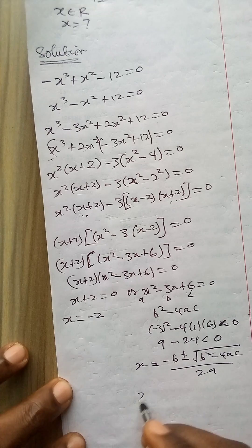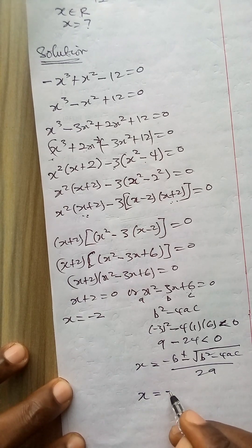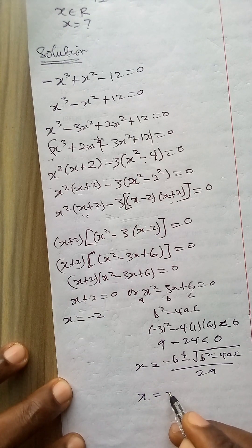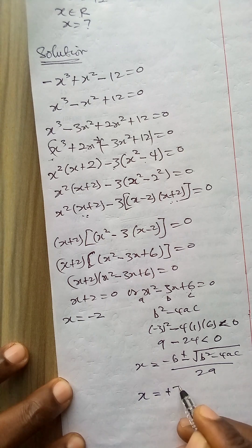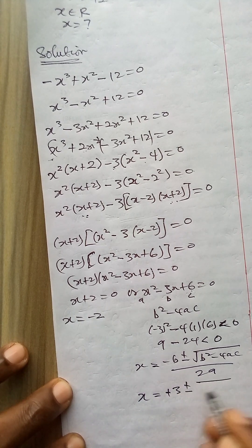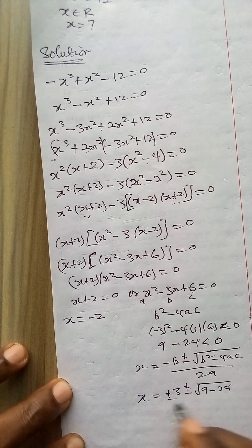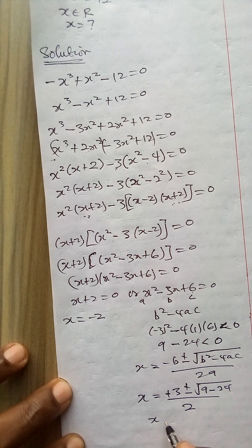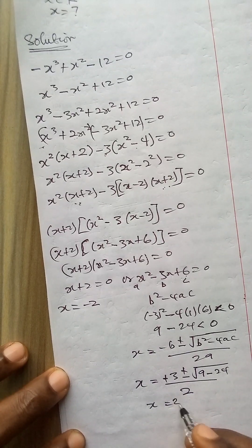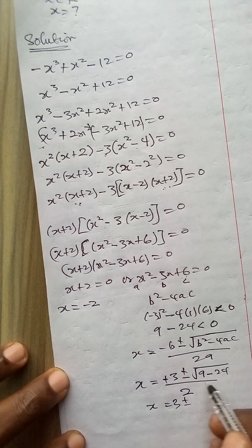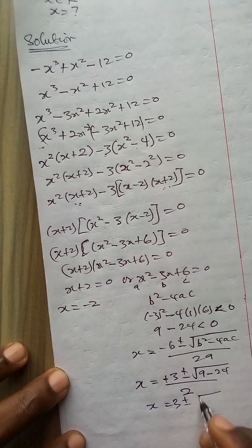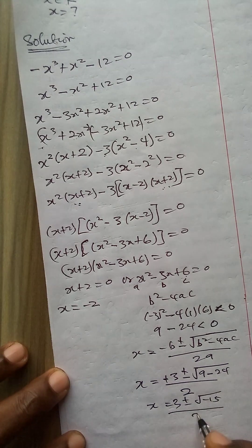Let me finish this part up. So x will now be minus minus 3, that is plus 3, plus or minus square root of (9 minus 24) which is what we got here, over 2 times 1. So x equals 3 plus or minus square root of (9 minus 24), which gives me minus 15. So this is square root of minus 15 all over 2.